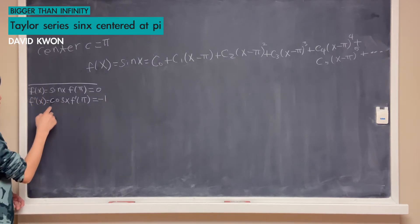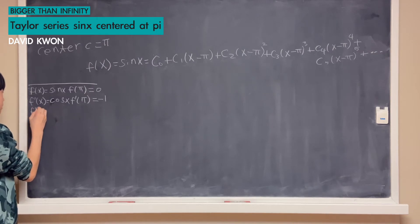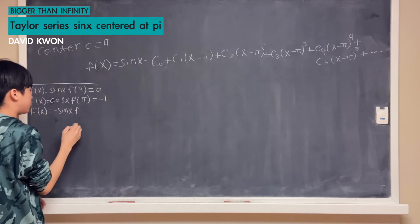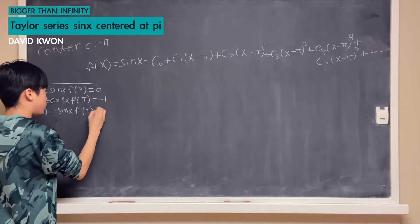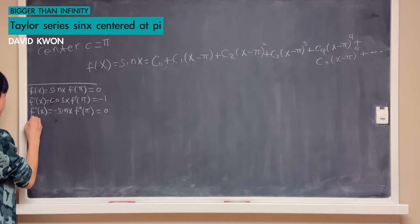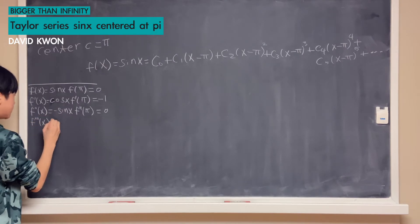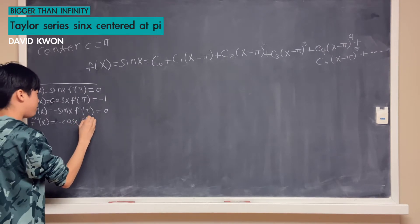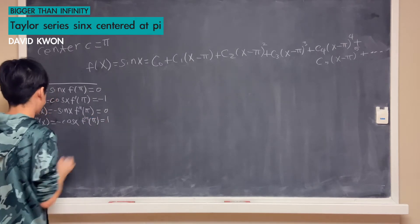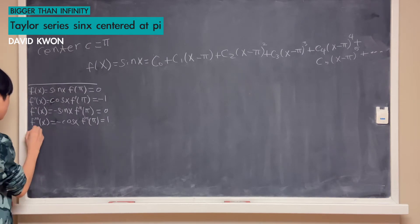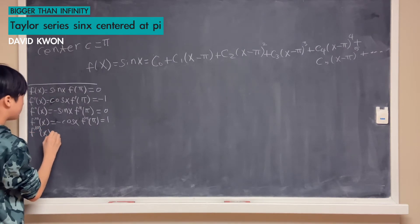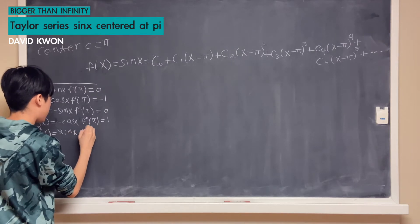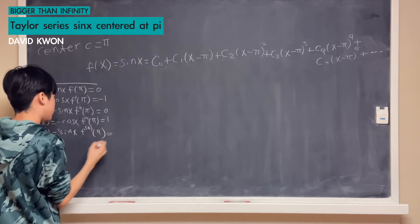Then we differentiate cos x. We have f″(x) equals negative sin x, so f″(π) equals 0. Then we differentiate negative sin x, so f‴(x) equals negative cos x, giving f‴(π) equal to 1. Then we differentiate negative cos x, so f⁽⁴⁾(x) equals sin x, and f⁽⁴⁾(π) equals 0.